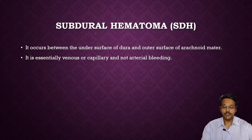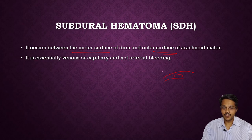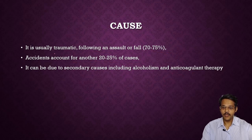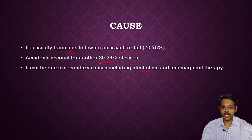Subdural hemorrhage is bleeding occurring between the under surface of the dura and the outer surface of the arachnoid. It is essentially venous or capillary and not arterial bleeding, as the subdural space is drained by venous sinuses. The cause is usually traumatic — falls account for 75% of cases, accidents account for 20-25% of cases — and secondary causes include alcoholism and anticoagulant therapy.